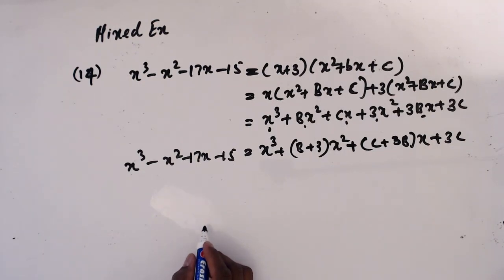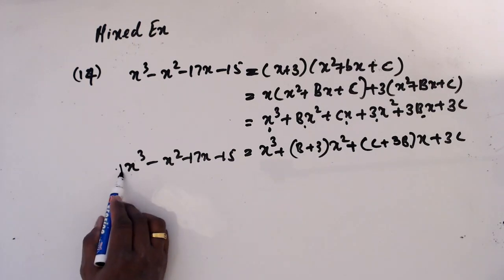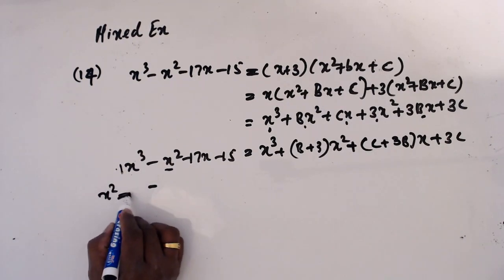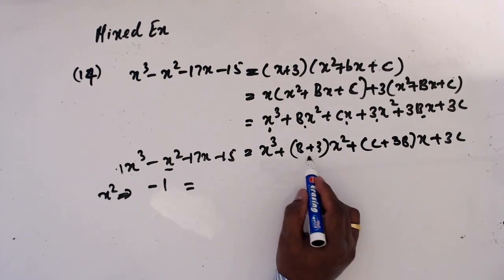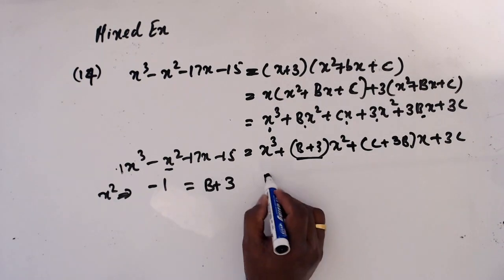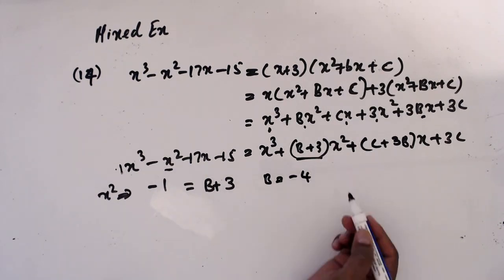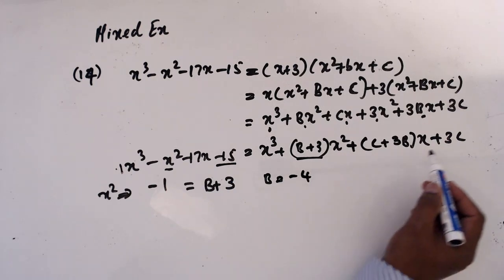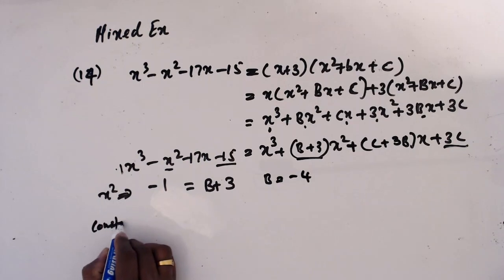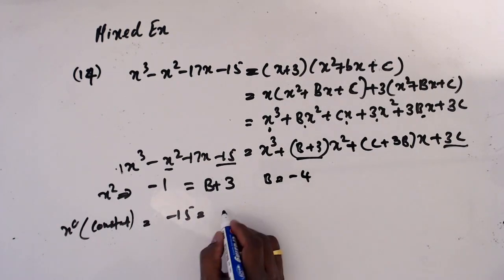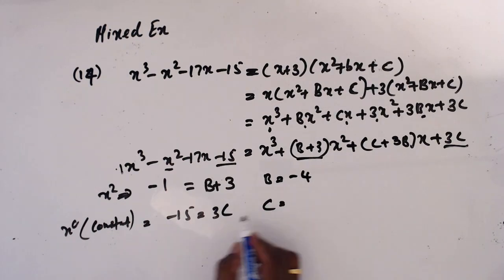Equating coefficients of x³: coefficient is 1 on both sides, consistent. For x² coefficient: left side is b + 3, right side is minus 1 (wait, it should equal minus 1). Wait — equating: b + 3 = minus 1, so b = minus 4. For the constant term: 3c = minus 15, so c = minus 5.